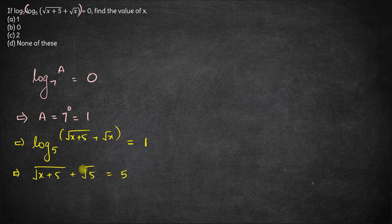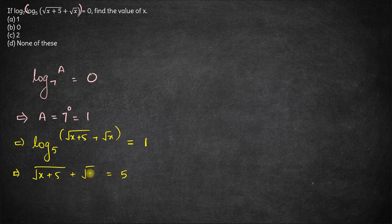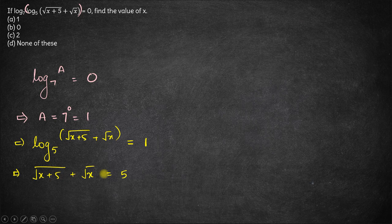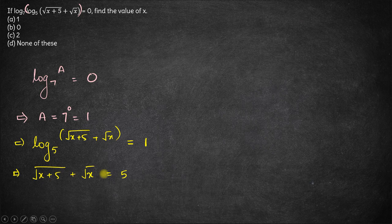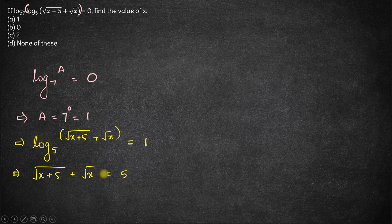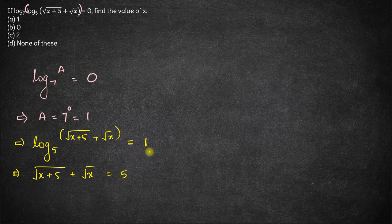Now either you can solve this by taking square on both sides and then forming, then you'll have to do square again. But that is a slightly lengthier and more calculation intensive method. What you can do is simply substitute or check options and see which option would satisfy this equation. So let's check each of these options one by one.